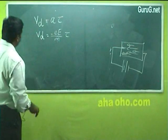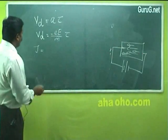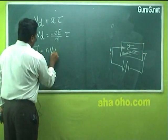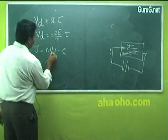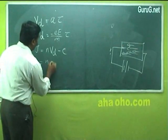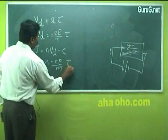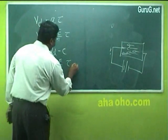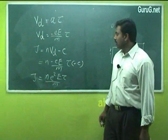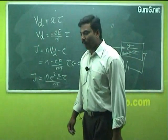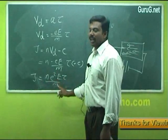Substituting the value of VD in equation number 1: J = N into VD into minus e. Therefore, substituting VD = minus eEτ/M, we get J = N into (minus eEτ/M) into (minus e). The current density is the total number of electrons moving per unit time on the application of the electric field, and it mainly depends upon the applied electric field.